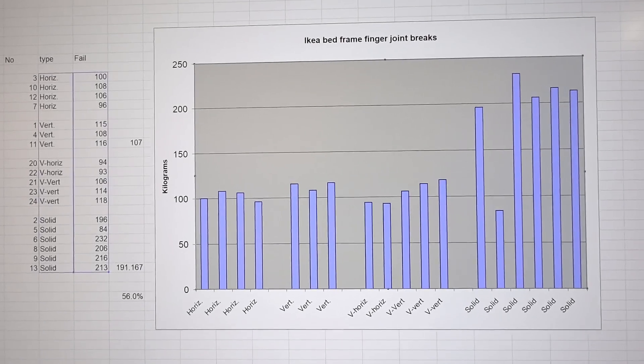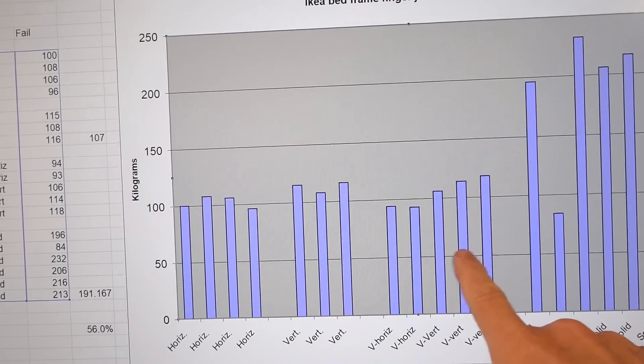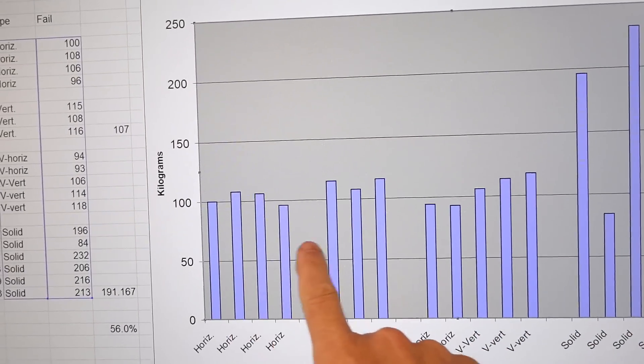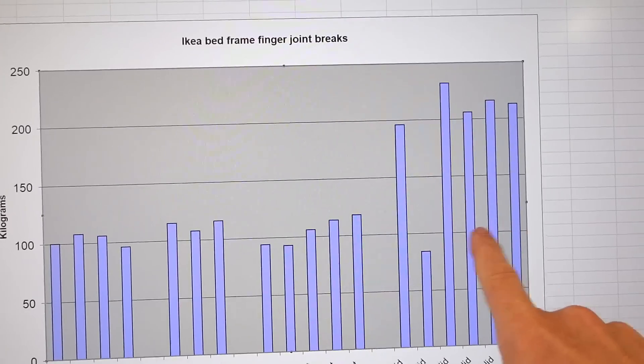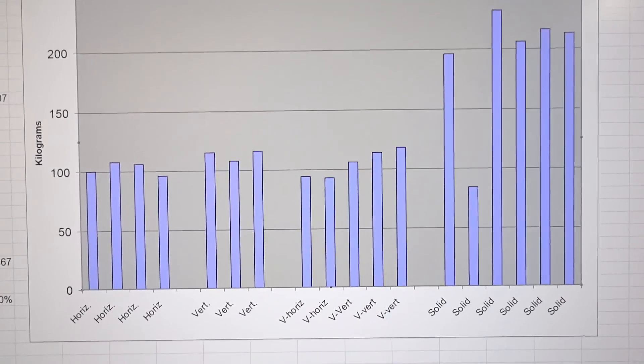Tabulating the numbers, I added the V joints right here and these did pretty much as well as the finger joints, although of course not as well as the solid wood.